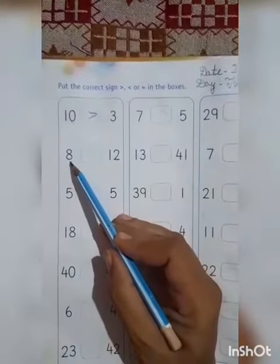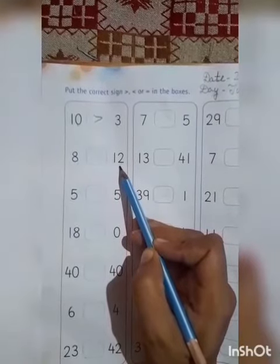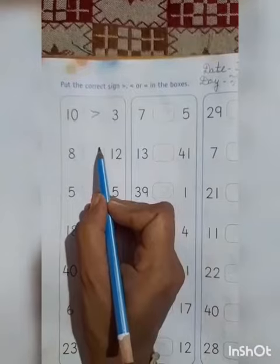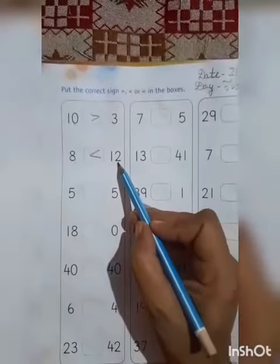Next one is number 8 and number 12. Now which one is greater. Yes, number 12 is greater. Again crocodile eats the biggest number. That is number 12.